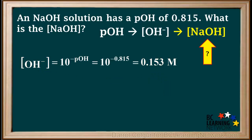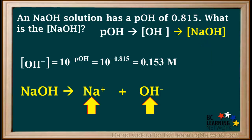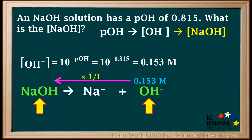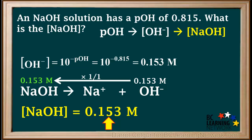The next step is to find the concentration of NaOH as a whole. We write the balanced dissociation equation for NaOH: NaOH dissociates to give one Na⁺ ion and one OH⁻ ion. The concentration of OH⁻ is 0.153 molar, and the mole ratio of NaOH to OH⁻ is 1 to 1. So the concentration of NaOH as a whole is 0.153 molar.